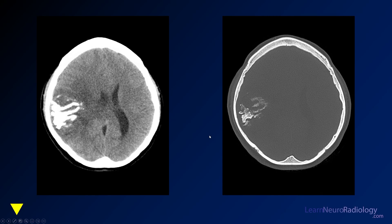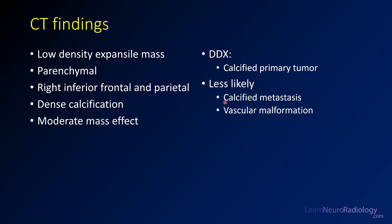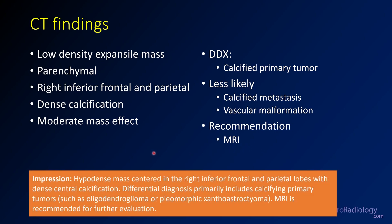When you have calcified lesions, it changes your differential a little bit. On your CT you've got a low-density, expansile mass in the parenchyma with dense calcification and moderate mass effect. When thinking about a differential — is there a calcified primary tumor? Calcified metastases are possible but less likely. Other things that calcify are vascular malformations like AVMs, which tend to have calcifications in a vascular or tube-like pattern. The primary tumors known to calcify are pleomorphic xanthoastrocytomas and oligodendrogliomas, of which oligodendrogliomas are a lot more common. We're going to recommend an MRI. So on our CT impression: hypodense mass in the right inferior frontal parietal lobe with dense calcification — calcifying primary tumors, oligodendroglioma or PXA — and we want to recommend MRI for additional evaluation.